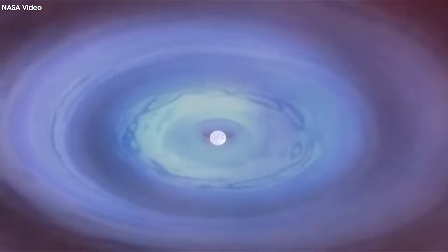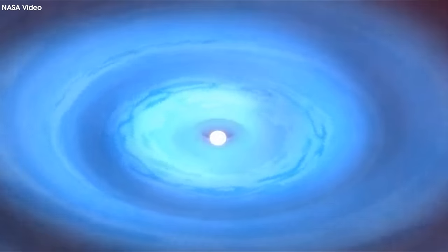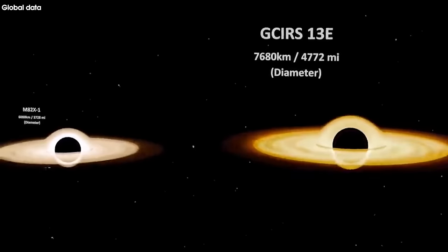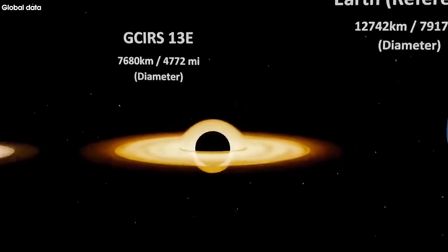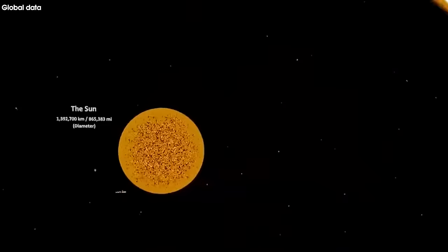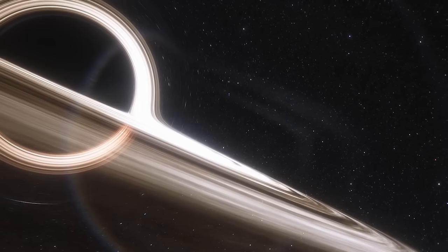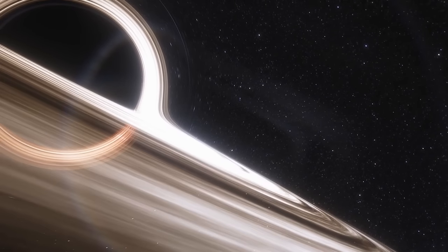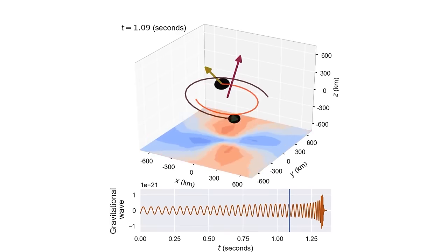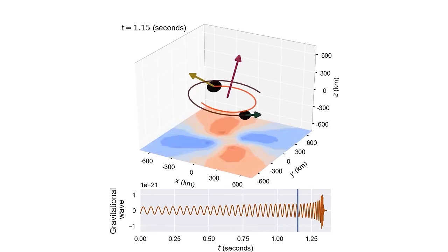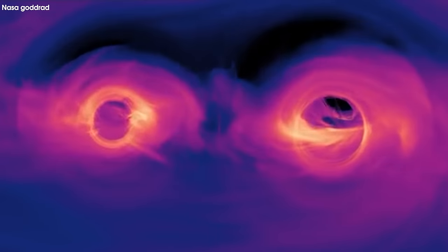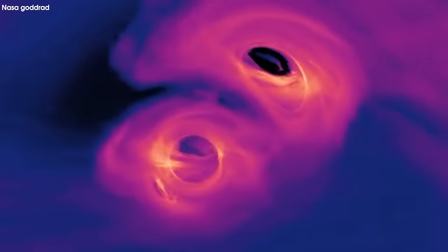Difficulty in detection: even with indirect observations, finding black holes is like a game of where's Waldo in space. They can be tiny, distant, and hard to spot among the stars. Plus, the tools used to locate them need to be super sharp. Theoretical models and simulations: Scientists also turn to their imagination to study black holes, using complicated models and simulations to figure out how they work. But these models require a ton of computing power and are always a work in progress.